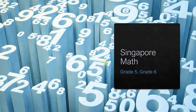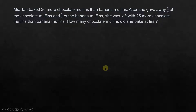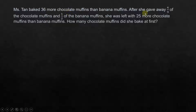Hello everyone, today we are going to look at a problem which applies for grade 5, grade 6, or primary 5, primary 6. Mrs. Tan baked 36 more chocolate muffins than banana muffins. After she gave away 4/9 of the chocolate muffins and 1/2 of the banana muffins, she was left with 25 more chocolate muffins than banana muffins. How many chocolate muffins did she bake at first? So it's a combination of whole numbers and fractions here.